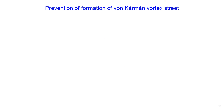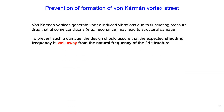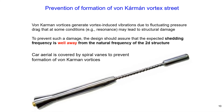Engineers try to prevent formation of von Kármán vortex streets because the vortices generate vortex-induced vibrations due to fluctuating pressure drag that in some conditions may lead to structural damage. To prevent such damage, the design should ensure that the expected shedding frequency is well away from the natural frequency of the structure. An example of a design that prevents formation of von Kármán vortices is a structure covered by spiral vanes.